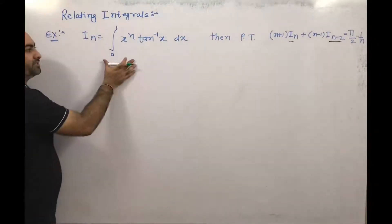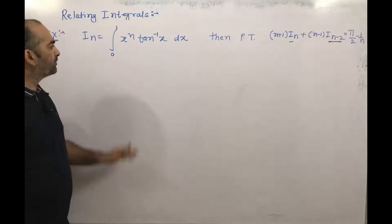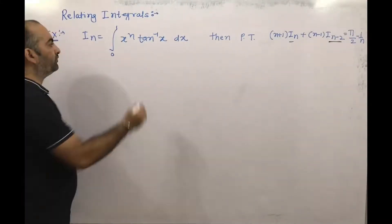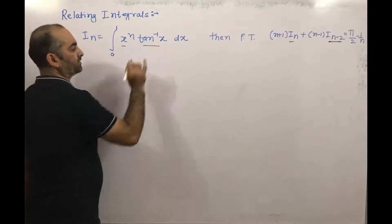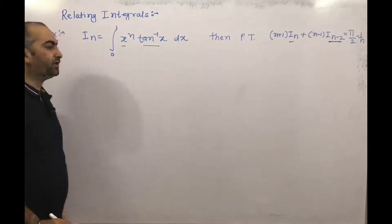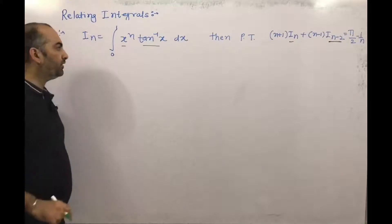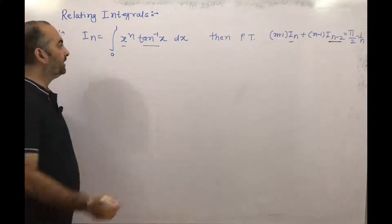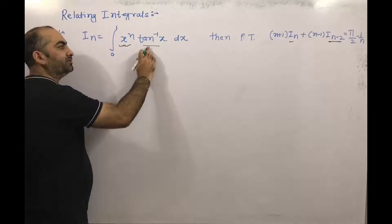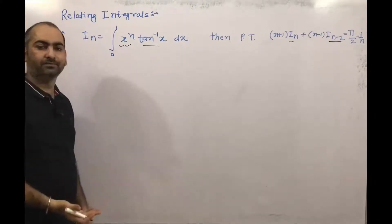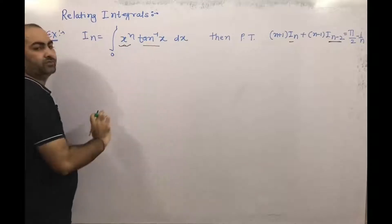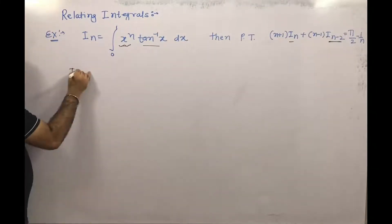From the problem, we can say we have to use integration by parts because there are two functions: x^n and tan⁻¹(x). Direct integration is not possible. So we use by parts. The integral of x^n is straightforward, but tan⁻¹(x) cannot be integrated directly, so tan⁻¹(x) is the differentiating function and x^n is the integrating function.